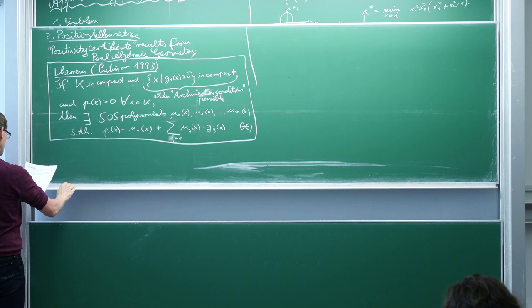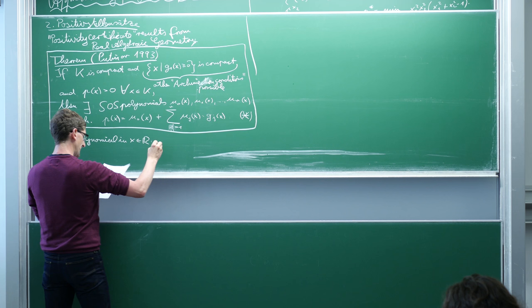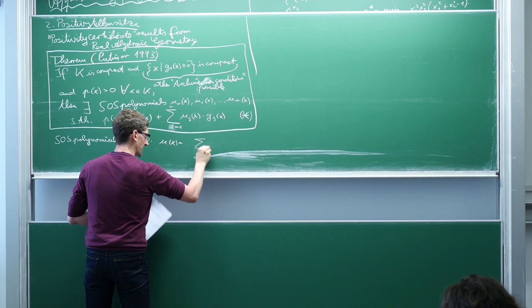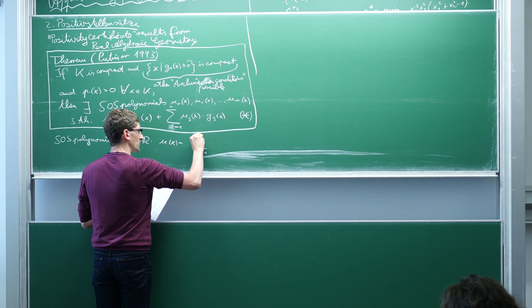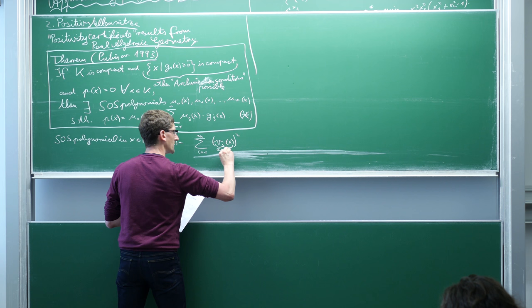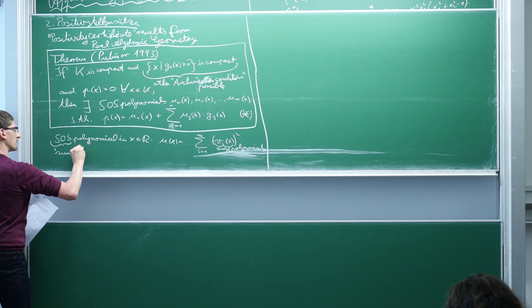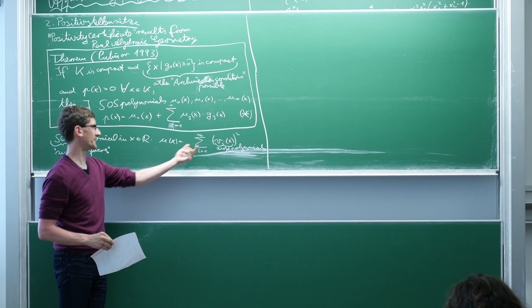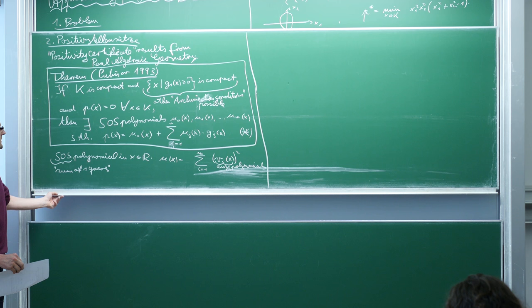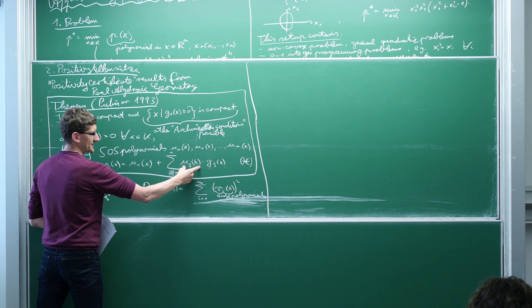What is an SOS polynomial? An SOS polynomial in n variables is any polynomial U that can be written as a sum of squares: a sum over index i of polynomials squared. SOS means sum of squares. This polynomial is a sum of the squares of other polynomials. So this theorem guarantees that if a polynomial is strictly positive on a set, then we can write this polynomial as a linear combination of the constraint functions times SOS polynomials, plus an additional SOS polynomial.